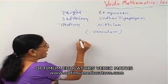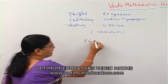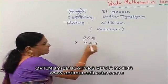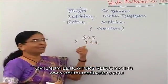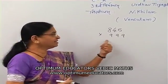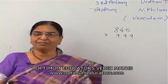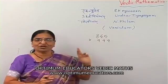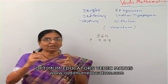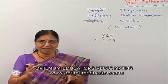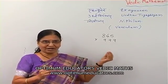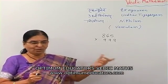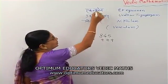For example, suppose I have a sum like 845 multiplied by 999. The digits are big — 999 — so the Urdhva-Tiryabhyam method is not useful, because when you do the cross multiplication and add them, the numbers become bigger and bigger, making the calculation complicated and cumbersome. So we can use the Eka-Niunena method instead.